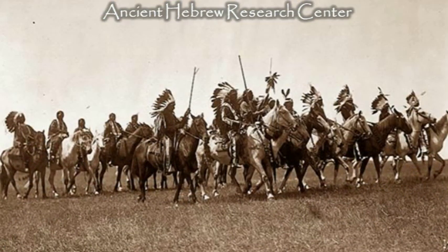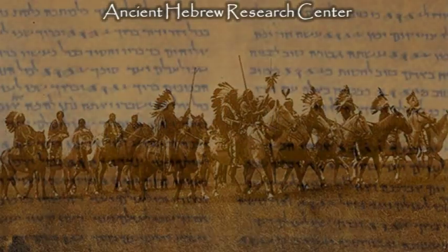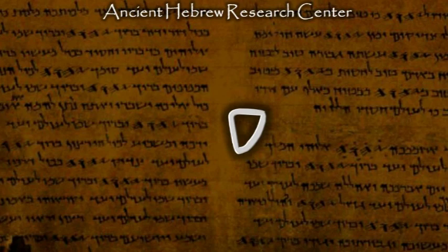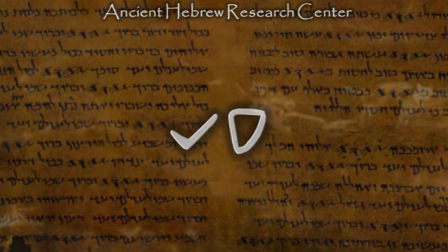The word Dag means fish. This is written with the letter Dalet, a picture of the tent door meaning back-and-forth movement, and the Gimel, which is a representation of a foot. The combined meaning of these two letters is the back-and-forth movement of the foot — the tail of a fish, as its foot, moves back and forth to propel itself through the water.